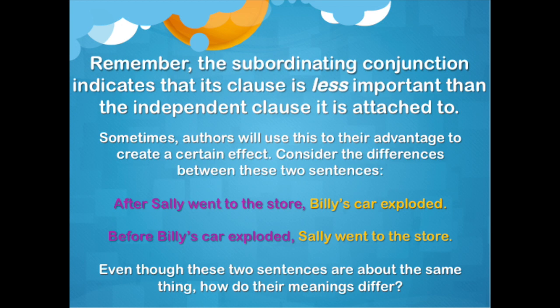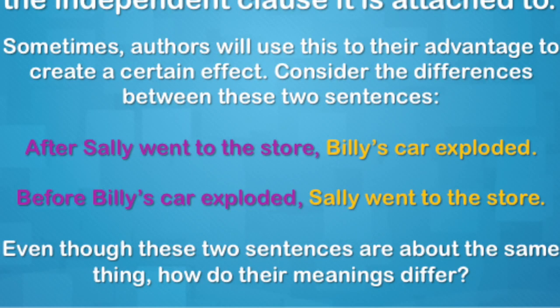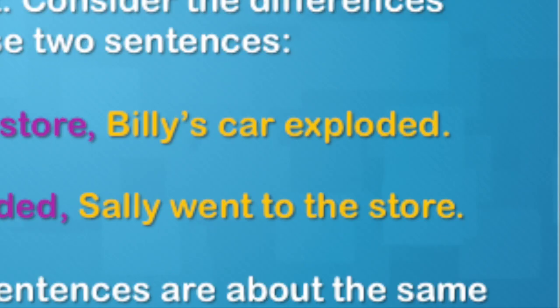So let's look at these two examples. We have the sentence, 'After Sally went to the store, Billy's car exploded.' And we have the sentence, 'Before Billy's car exploded, Sally went to the store.' Their meanings are different because the independent clause is different for both sentences. In the first example, our independent clause is 'Billy's car exploded.'